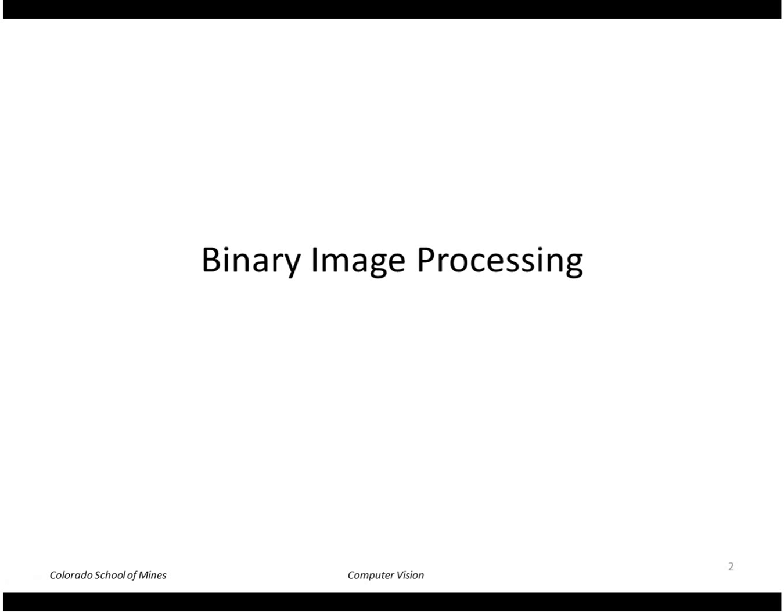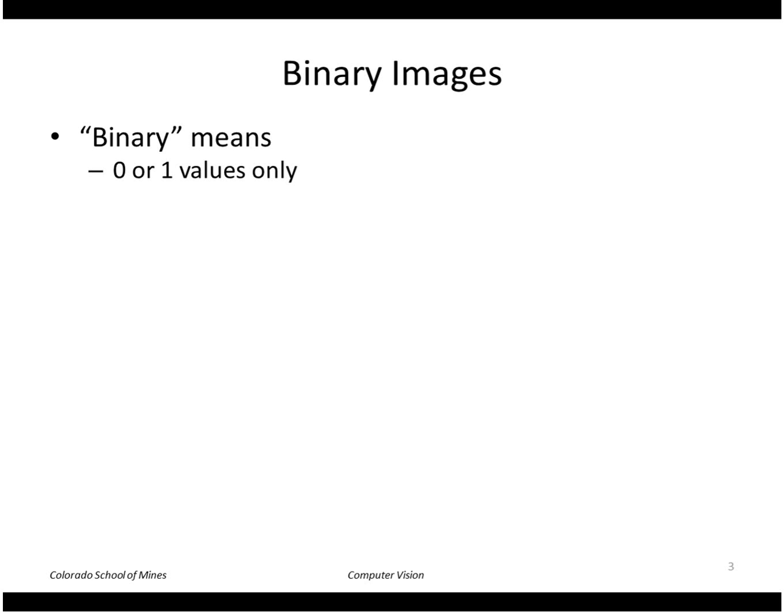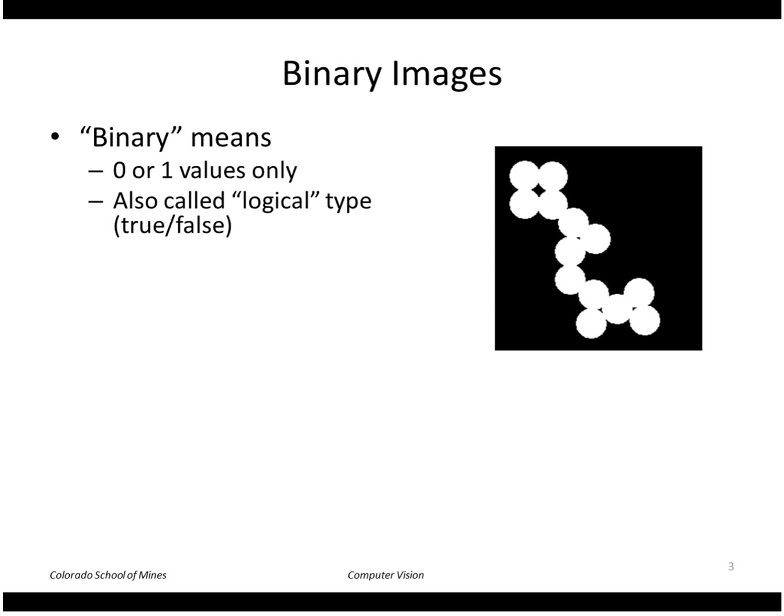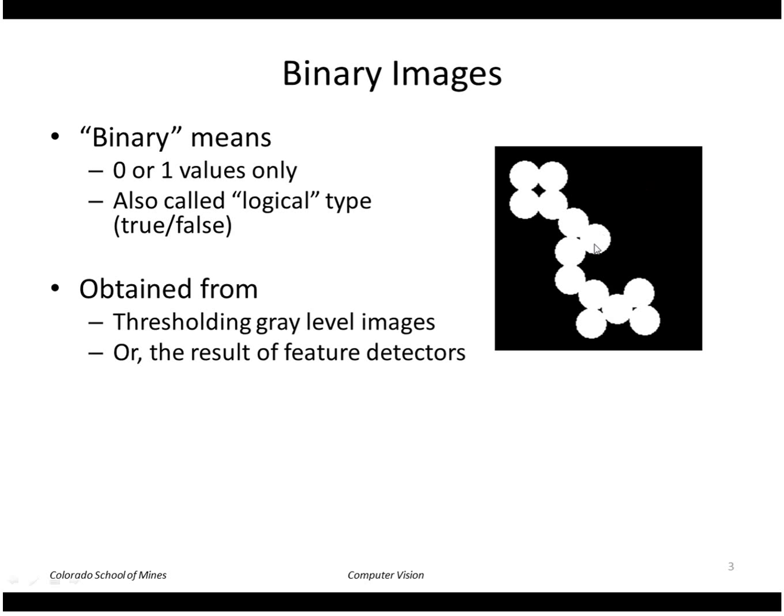I'm going to talk about binary image processing. Binary images are just images containing zero or one values only, or you might think of them as true or false or on or off. For example, this image contains white pixels, say ones, and zeros for the background. We might get these images from a thresholding operation or as a result of doing some kind of feature detection. We often want to count or measure the shapes of 2D binary image regions, for example we might want to count how many circles there are and measure their area and location.